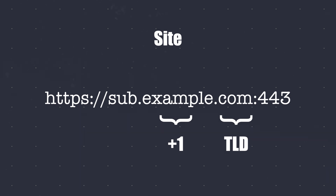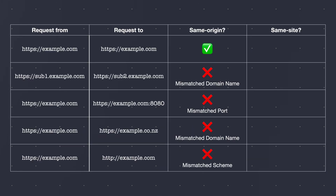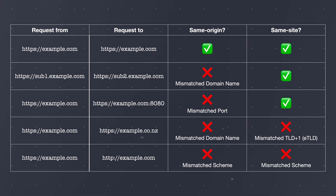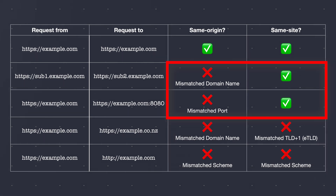Additionally, when checking whether a request is same-site or not, the URL scheme is also taken into account. Let's get back to our previous examples, but this time we check if we have same-site requests. I encourage you to pause the video and try to figure out which scenarios are same-site and which are cross-site. As you can see, all cross-site requests are cross-origin. However, not all cross-origin requests are cross-site.